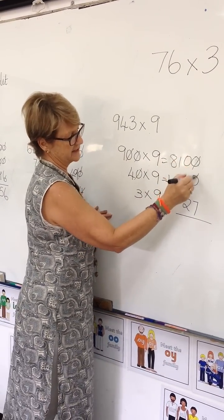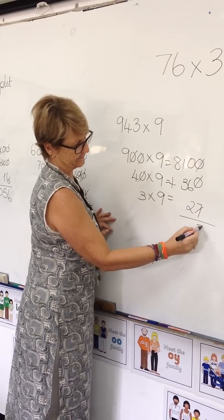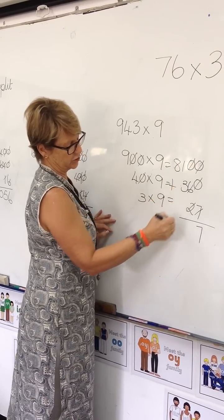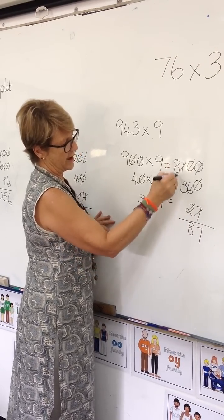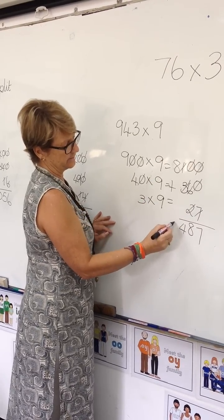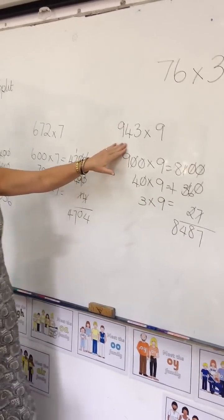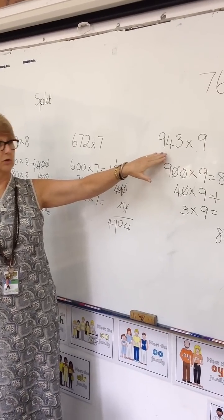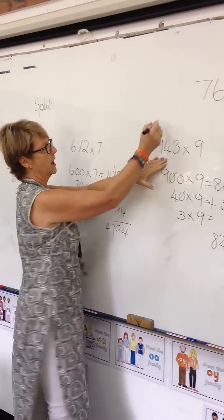Let's do it all together. 0 plus 0 plus 7 is 7. 0 plus 6 plus 2 is 8. 1 plus 3 is 4. 8 plus nothing is 8. What is this number really? Nearly what thousand? 900.